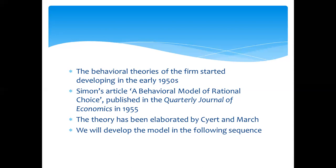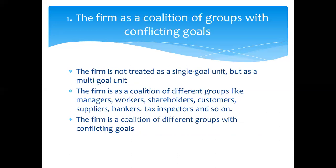We will develop the model in the following sequence. The firm is a coalition of groups with conflicting goals. In the Cyert and March model, we consider a firm not as a single goal unit. In traditional theory the firm is a single goal unit, but here the firm is considered as a multi-goal unit.